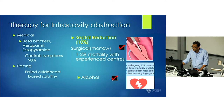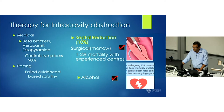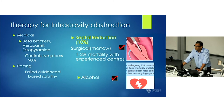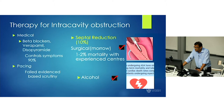When we look at therapy for intracavity obstruction, medical therapy is well documented with beta blockers, calcium channel blockers, and disopyramide. Pacing has probably failed evidence-based scrutiny and is no longer first-line therapy. Septal reduction, which would be in 5% to 10% of cases, involves surgical therapy with the Moro procedure, which in high-volume experience centres has excellent outcomes — 1% to 2% mortality. Alcohol ablation, first described by Ulrich Sigwart, has been around for about 25 years and has emerged as a useful complementary therapy.